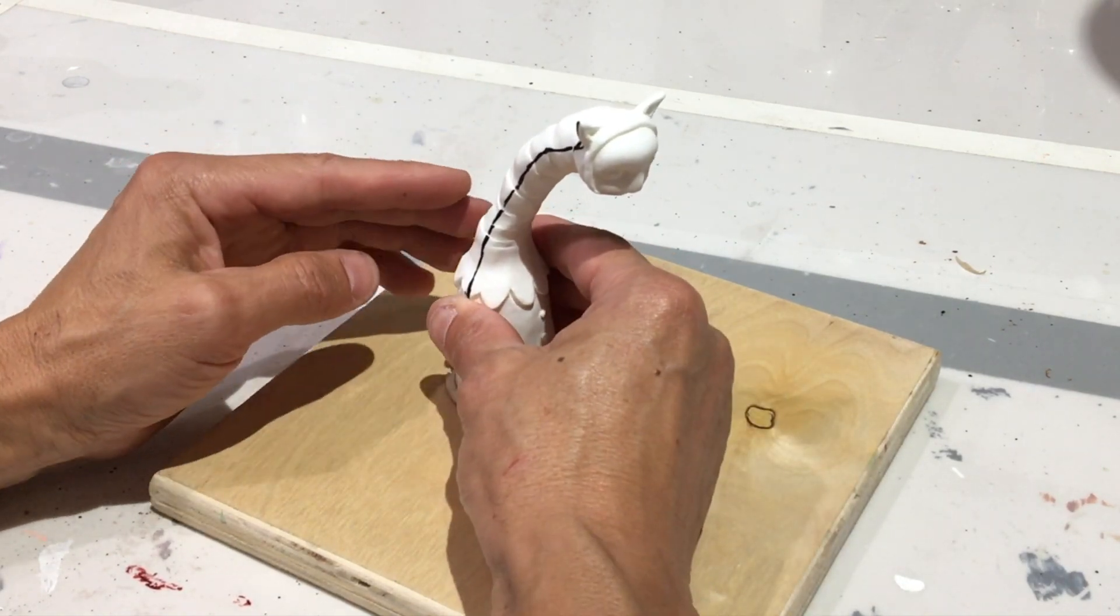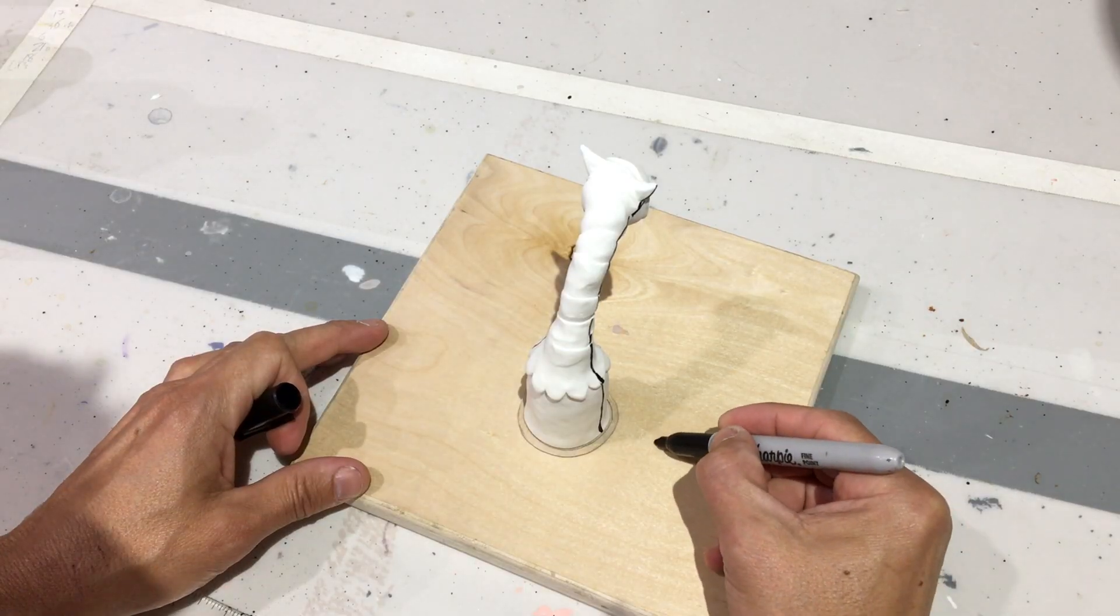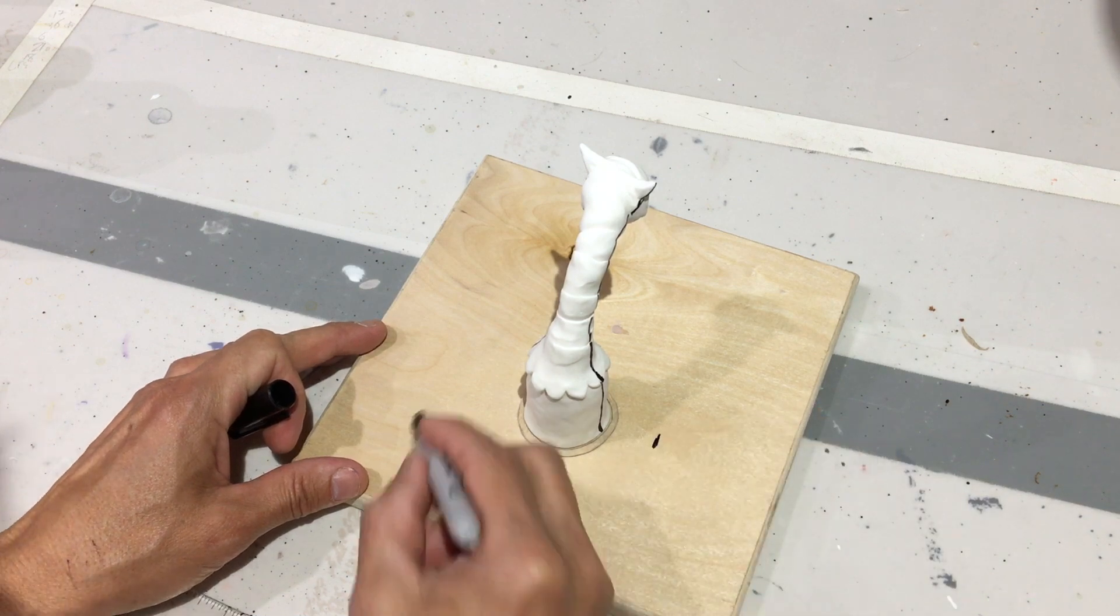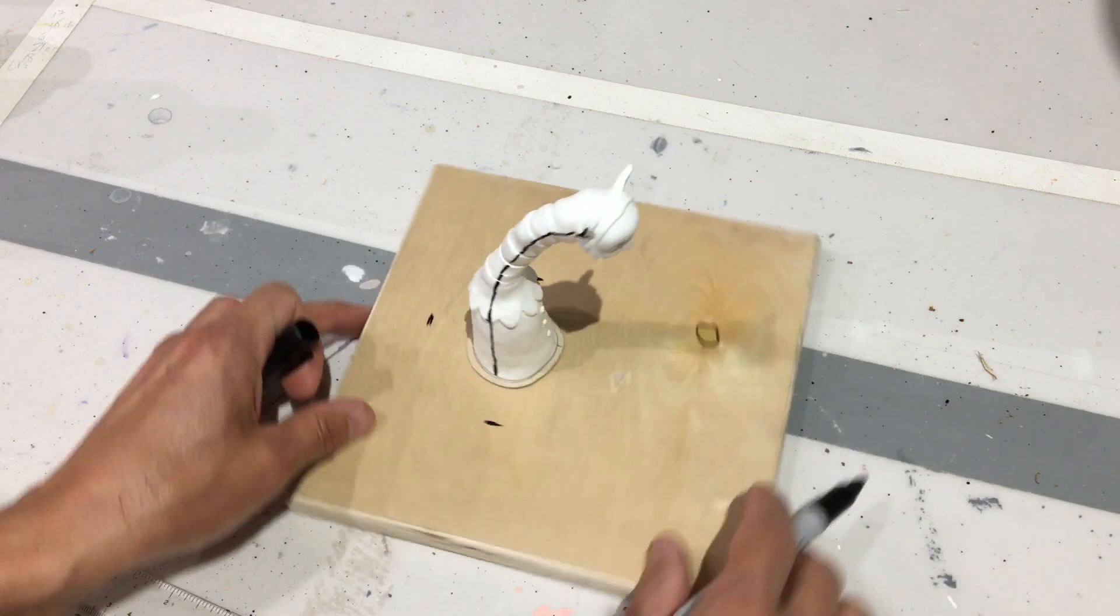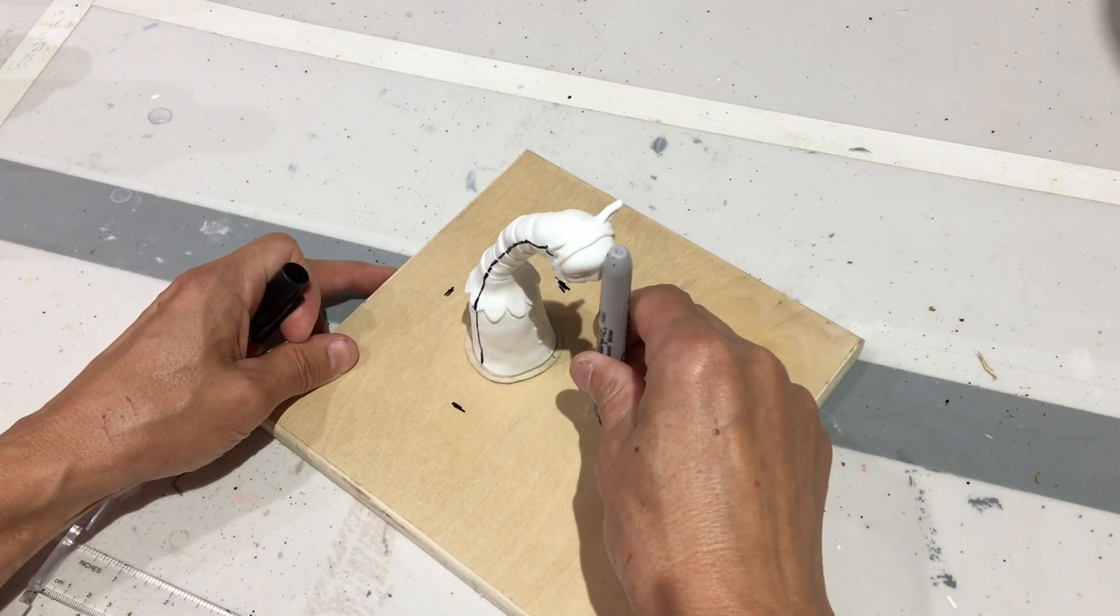Then I use the glue again to attach it to the mold board. And then using a sharpie and this transparent T-square, I'll draw a box or a rectangle around the piece. And this will be the dimensions of my mold box and mold.